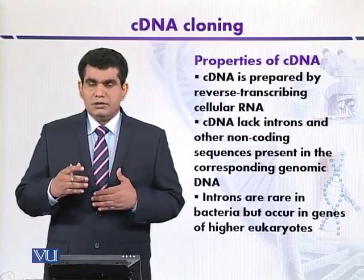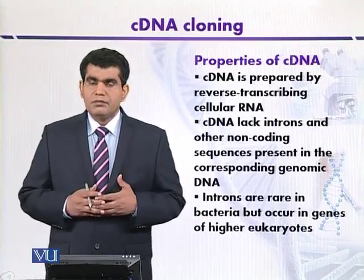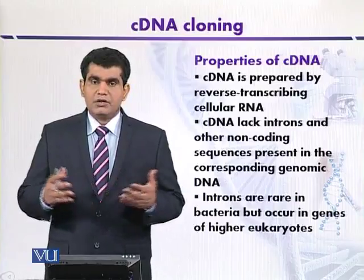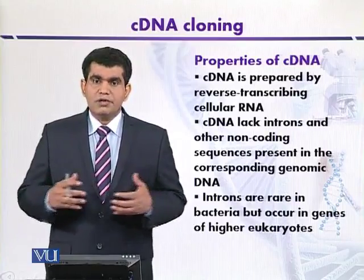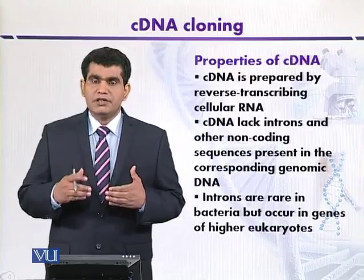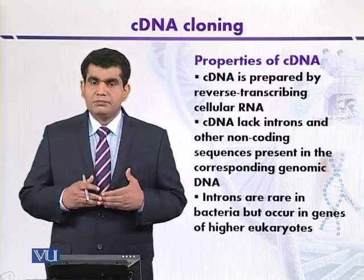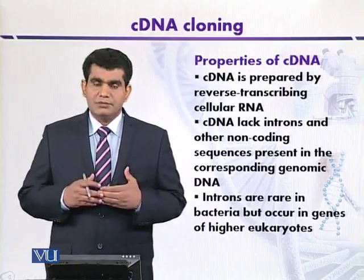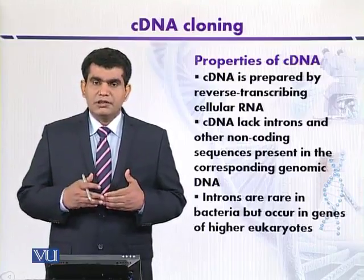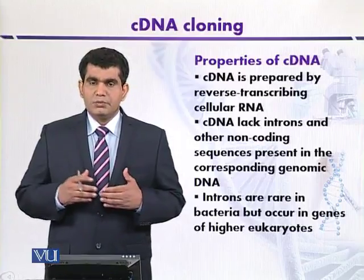cDNA can be produced by subjecting messenger RNA to reverse transcriptase. Certain viruses contain RNA as their genome and are called RNA viruses, the most common example being retroviruses. Retroviruses have the ability to convert their RNA into DNA because they contain an enzyme called reverse transcriptase. This ability of reverse transcriptase can be used in the laboratory to produce a copy of DNA from RNA, which is called cDNA, and this cDNA can be used to construct libraries.